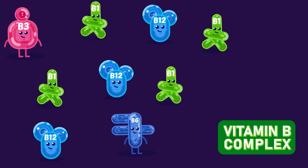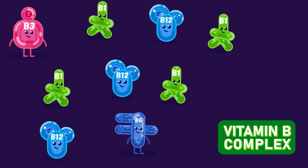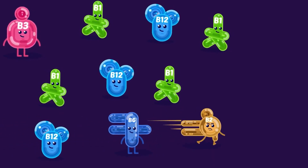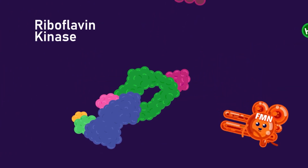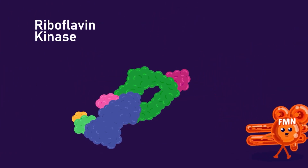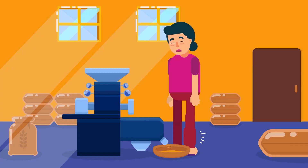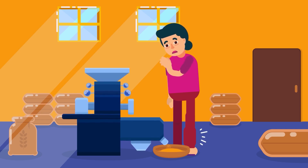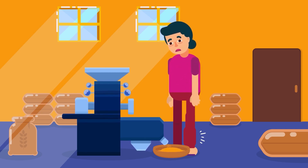Vitamin B complex has many subtypes, many of which are important coenzymes in cellular respiration. Beriberi and anemia are deficiency diseases caused by a lack of certain B vitamins. Yeast, liver and bran are rich sources of the vitamin.